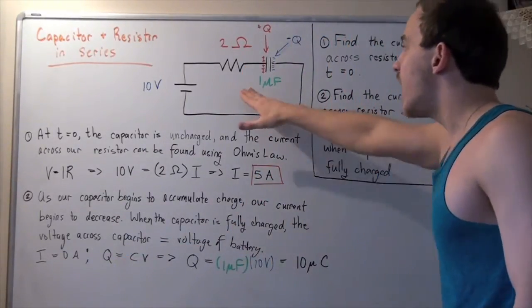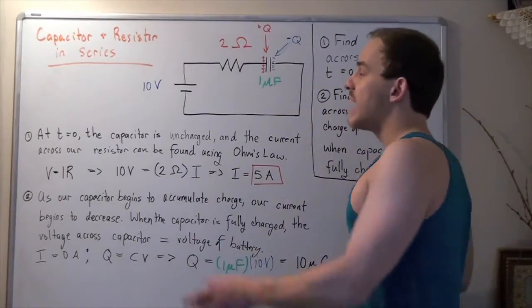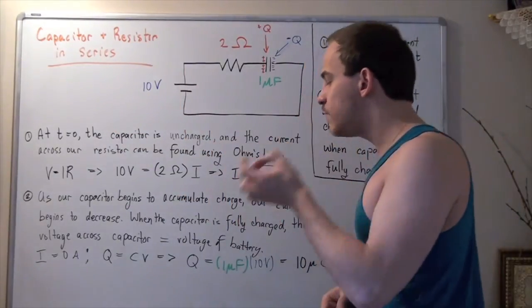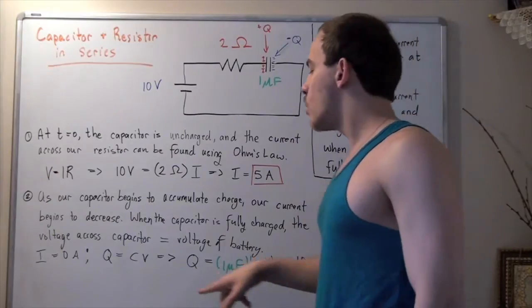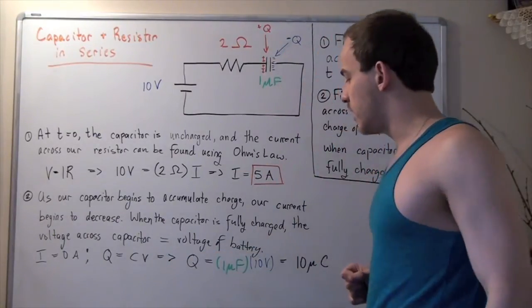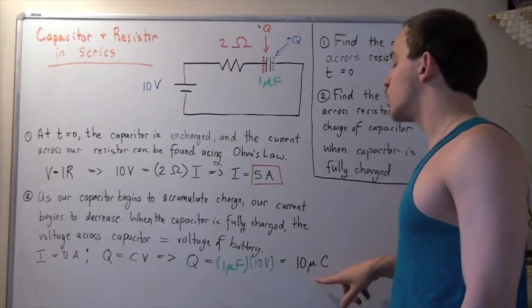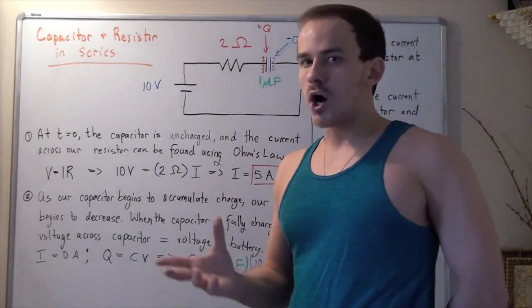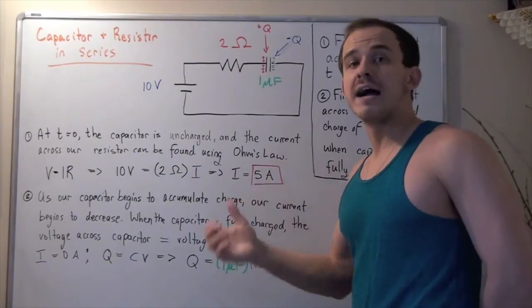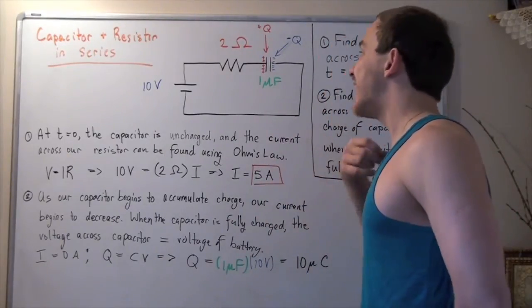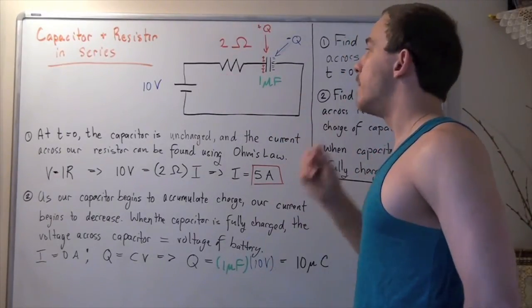Now we want to find the charge on our capacitor. When it is fully charged, the voltage equals the voltage of the battery. Using the formula Q equals CV, we know our capacitance and our voltage. Plugging in: 1 microfarad times 10 volts gives us 10 microcoulombs, or 1 times 10 to the negative 5 coulombs. So when our capacitor is fully charged, the charge is 10 microcoulombs, and because electrons aren't moving through our resistor, the current is zero.